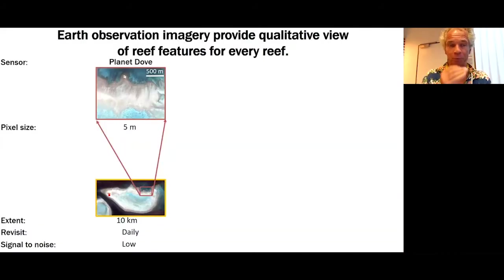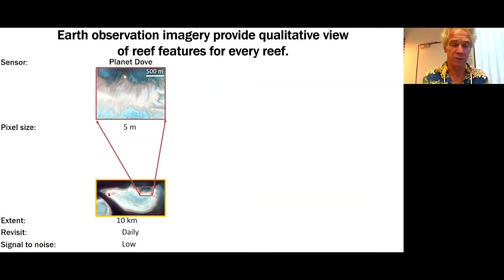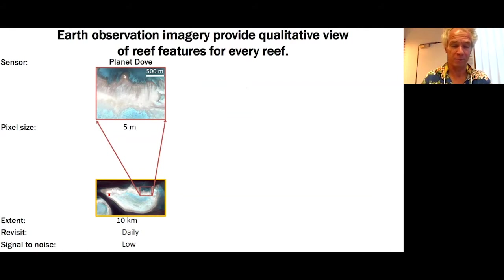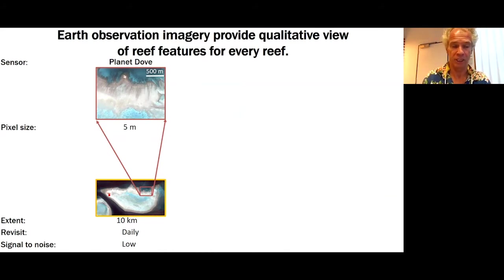The imagery we look at varies by sensor type, pixel size — the level of detail you can see — extent, how much one image captures, how often it revisits, and how good the image is — the signal-to-noise ratio.